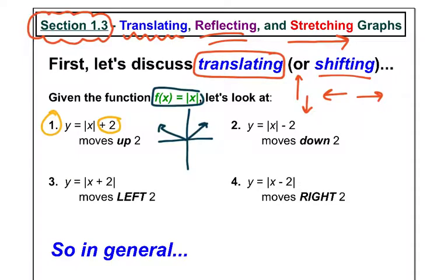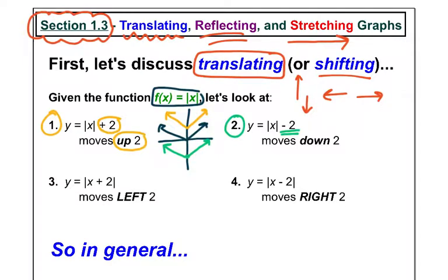Let's go back to number one. It looks like I'm adding two on the outside, and if I graphed that, it would look like this — it went up two. How about number two? If I take my absolute value graph and now I'm going to subtract two on the outside and graph it, two subtracted on the outside means it moved down two.